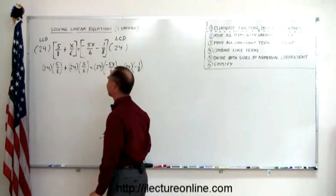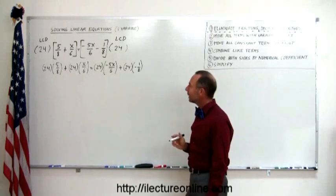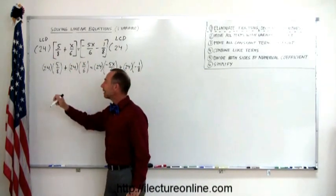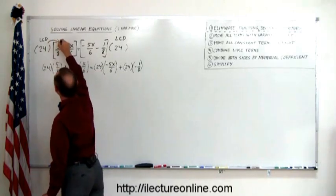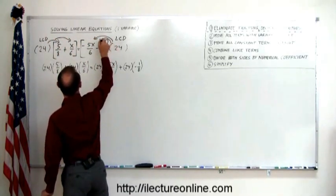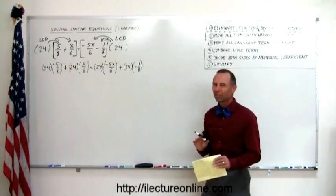So notice what I did. I found the lowest common denominator. And then I went ahead and multiplied both sides of the equation by the lowest common denominator. And then I distributed that over every one of the fractions inside those brackets. Those brackets that I added just for simplicity.